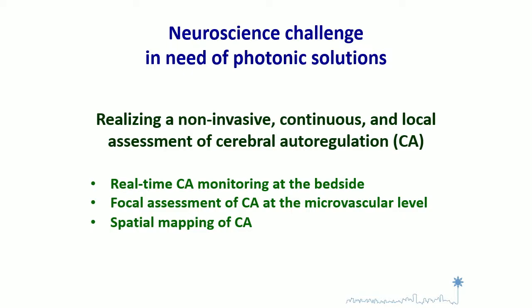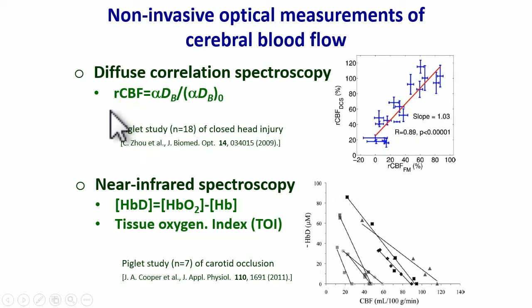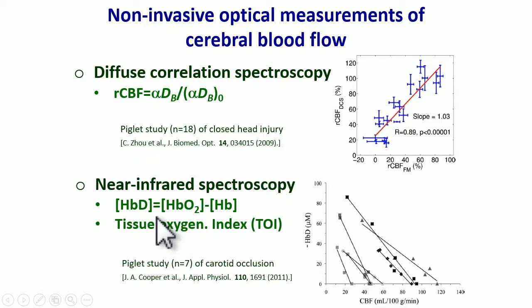This is important because it can provide real-time monitoring at the bedside and focal assessment of autoregulation at the microvascular level, enabling spatial mapping of cerebral autoregulation, which today is not possible. To do this, optics should be used to measure blood flow. We have heard about diffuse correlation spectroscopy — a well-validated technique showing how correlation times are related to blood flow. Also, near-infrared spectroscopy has been used, with tissue oxygenation and hemoglobin difference as surrogates for blood flow.